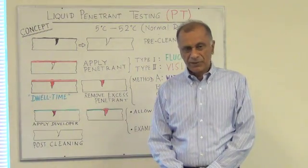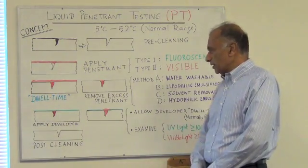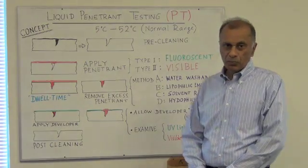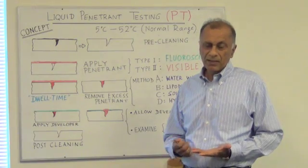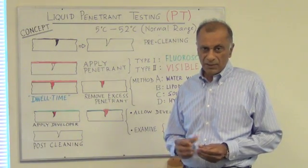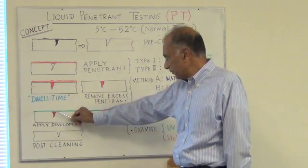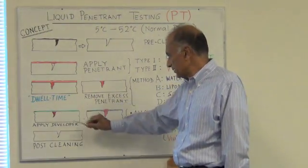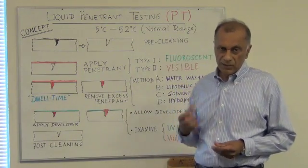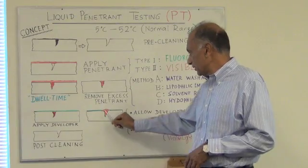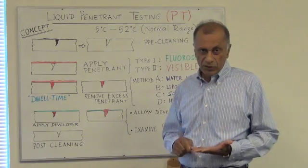Once the penetrant has been removed from the surface, a developer is applied. The purpose of the developer is to pull the penetrant out of the discontinuities through a process called the reverse capillary reaction. The developer is applied on the surface, and after a little while the penetrant is pulled out of the discontinuities and shows up on the surface. The final step is examination of the surface.